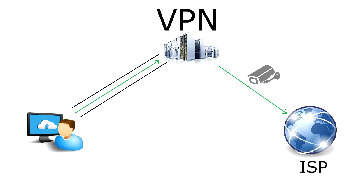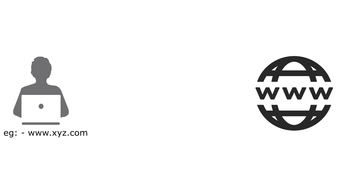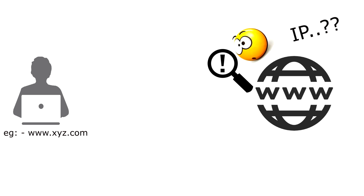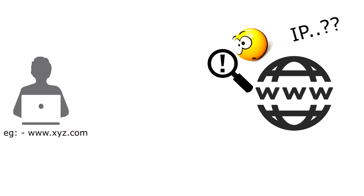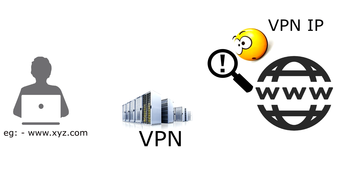All your ISP can see is that you're connected to a VPN. On top of that, the websites you visit don't see your actual IP address — which can be tracked to your physical location. Instead, websites only see the VPN's IP address, as all the data is rerouted through that encrypted connection.